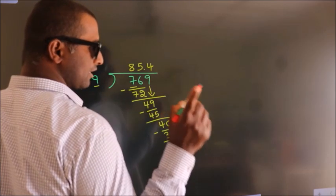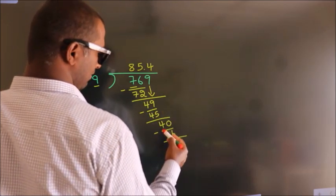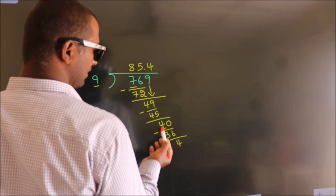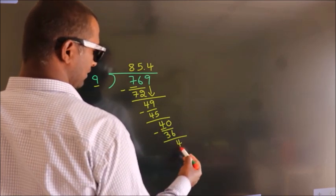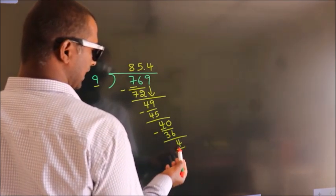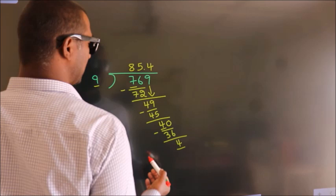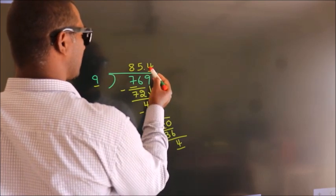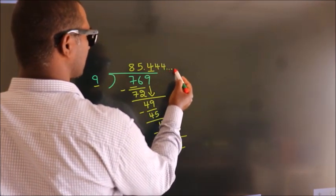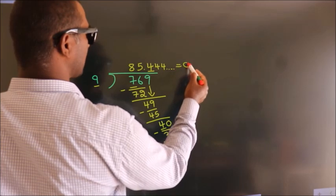Now you observe, we had 4 here and we got 4 again. That means this number keeps on repeating. So this is our quotient.